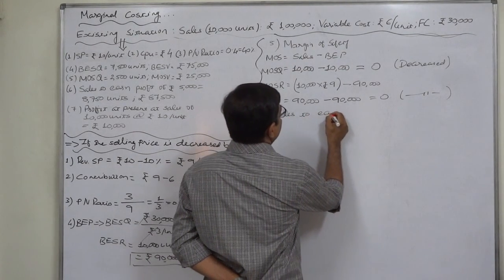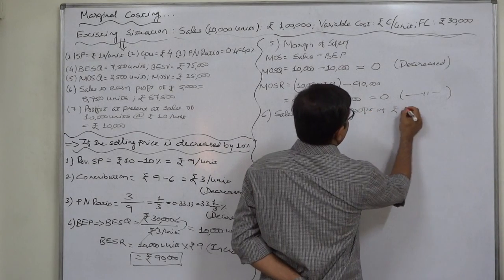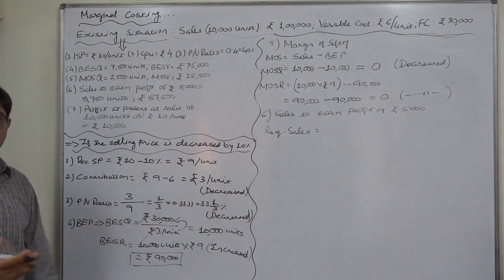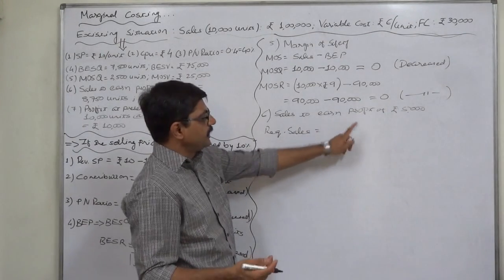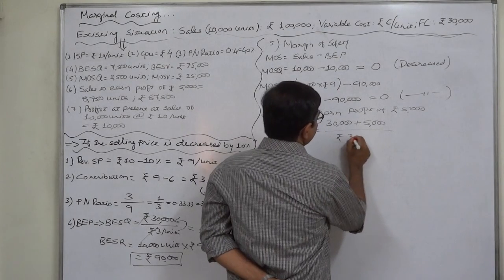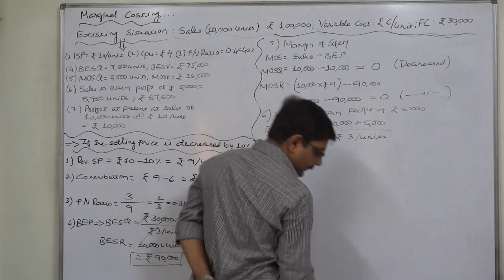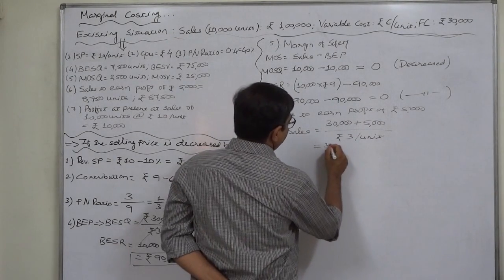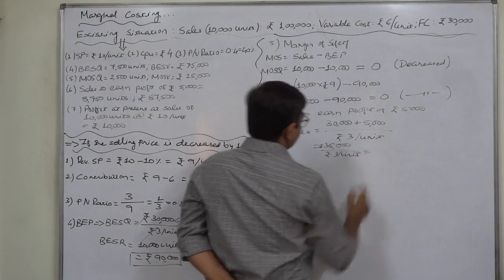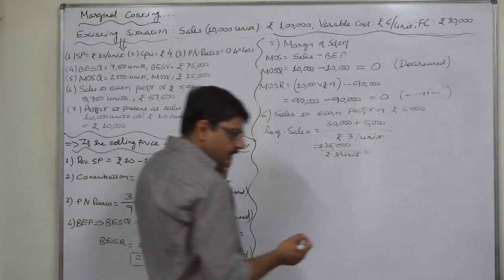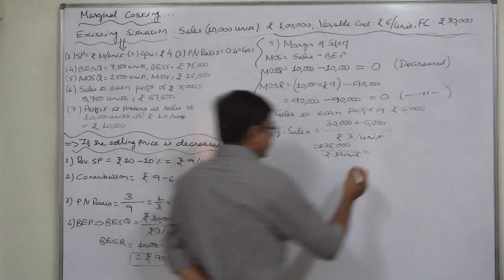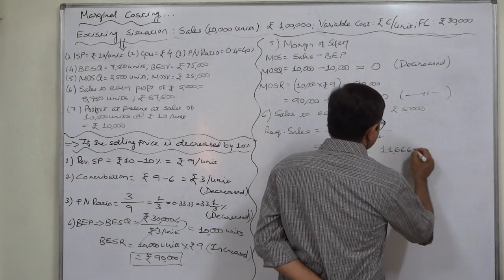Point 6: sales required to earn a profit of rupees 5,000. The formula is fixed cost plus desired profit upon contribution per unit. Fixed cost is 30,000 plus desired profit 5,000, and revised contribution per unit is rupees 3. So the equation is 35,000 divided by rupees 3 per unit. The required sales quantity comes to 35,000 divided by 3, which is 11,666.67 units.